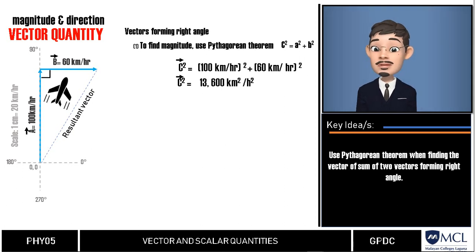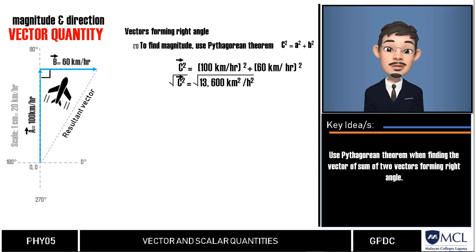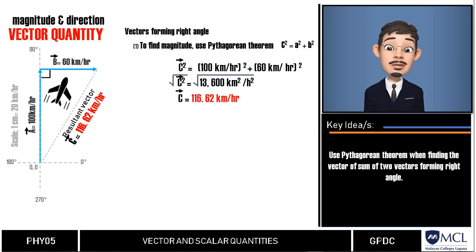Then to eliminate this square for resultant vector, we would find the square root of both sides of the equation. And so, the resultant velocity would be 116.62 km per hour.